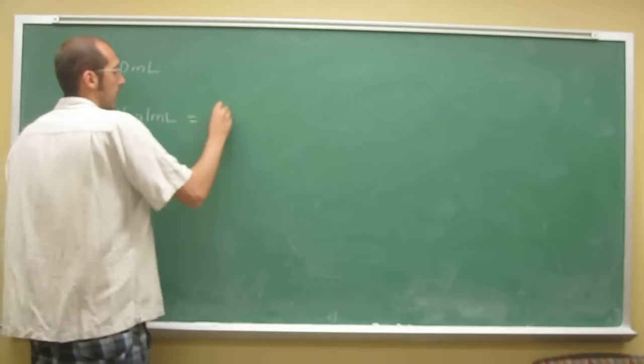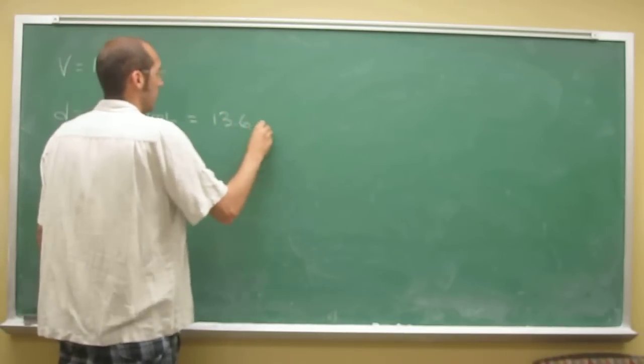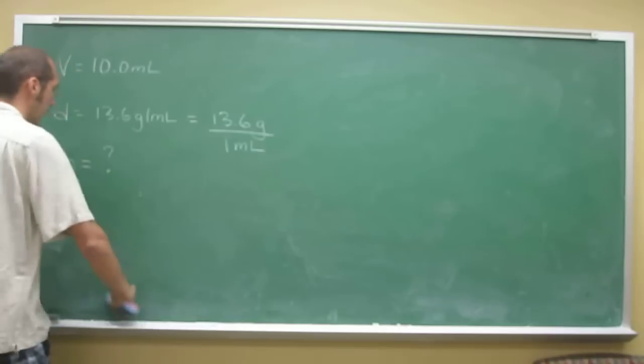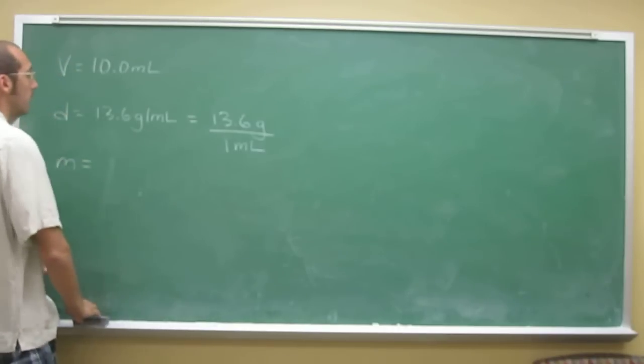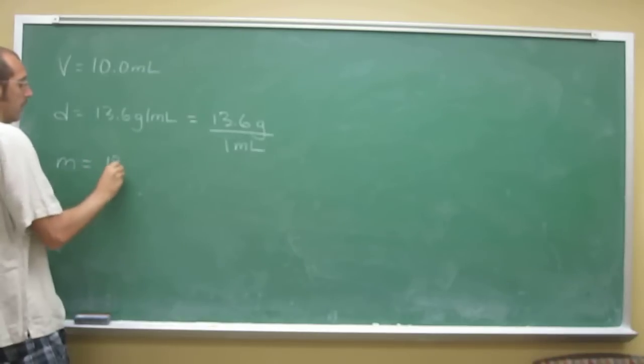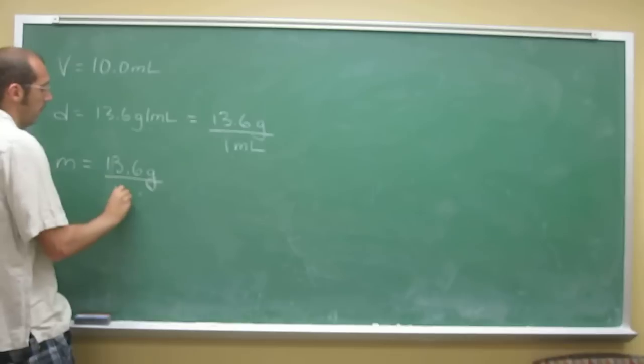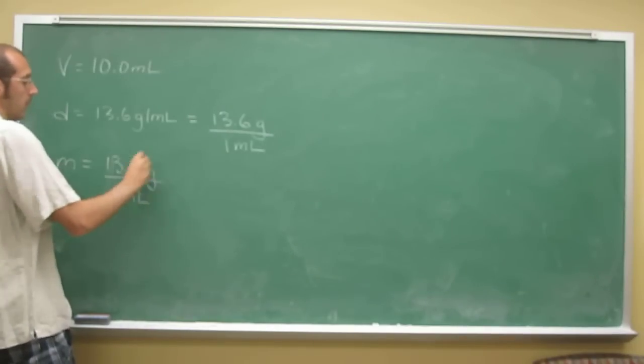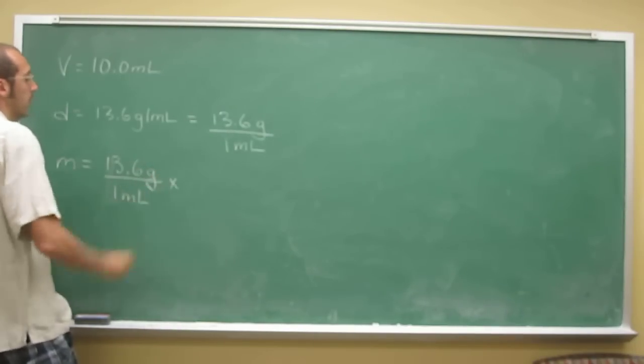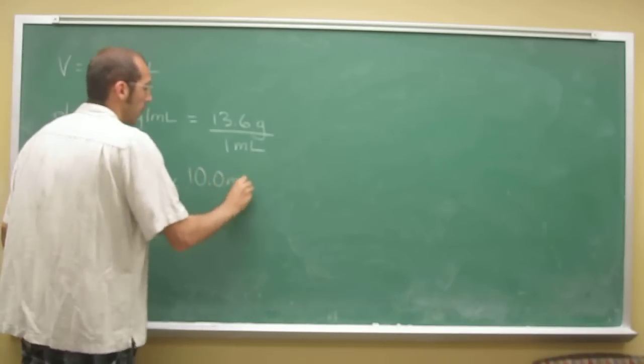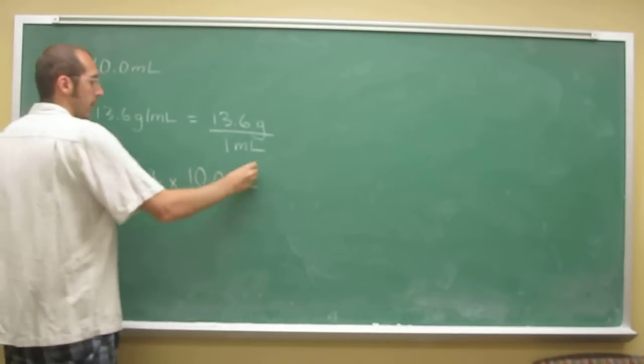because remember this is the same thing as 13.6 grams per 1 milliliter. And remember all we need to do is cancel out our units. So the mass is going to be 13.6 grams divided by 1 milliliter, because we want grams on the top, because grams is the mass number. That's 10.0 milliliters to cancel out our milliliters.